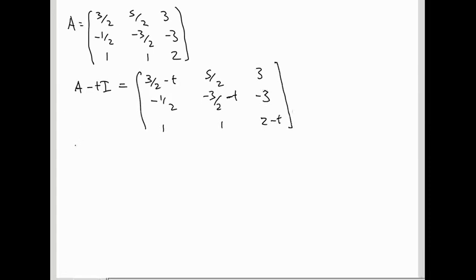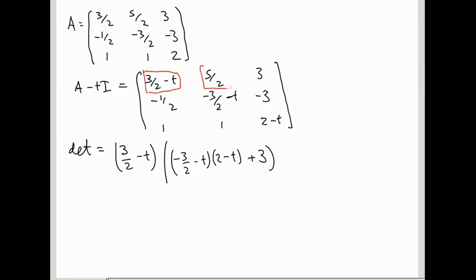When we take its determinant, I'm going to use this cofactor expansion. So we're going to get 3 halves minus t, times minus 3 halves minus t, times 2 minus t, minus minus 3. That's taking this first entry into account. Next we have things for this second entry. That's going to give minus 5 halves, times minus 1 half, times 2 minus t, minus minus 3.